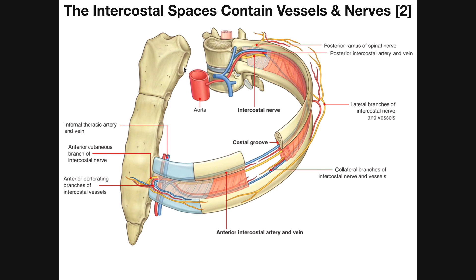This would be where Rib 1 attaches to the manubrium. This would be Rib 2, 3, and so that makes this Rib 4, and that makes this Rib 5. We would actually call this the fourth intercostal space, because the space between Rib 1 and Rib 2 would be the first intercostal space, between Ribs 2 and 3 would be the second, third, and then this space is the fourth.